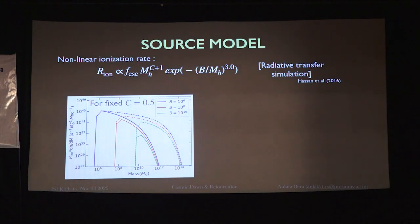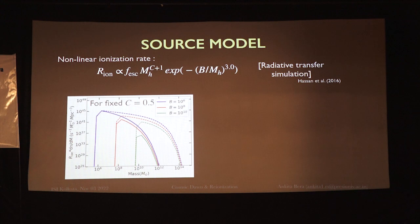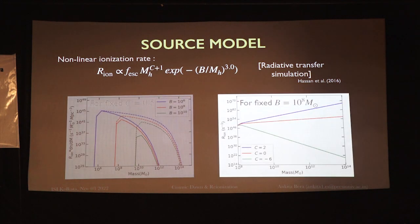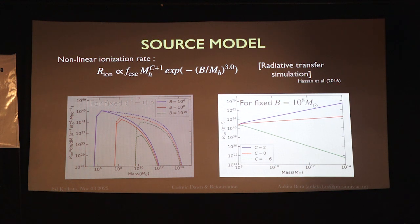This function has a Schechter-like form with a power-law cutoff on one side and an exponential cutoff on the other. We have different parameters in our source model: V, C, F, SP, and others. If we fix C and vary the B parameter, B acts as the minimum halo mass required for ionizing emissivity. The most interesting parameter is C: when C equals 0, the relation between ionizing emissivity and halo mass is linear. When C is positive, most contribution comes from high-mass halos; when C is negative, ionization is mostly governed by low-mass halos or faint galaxies.